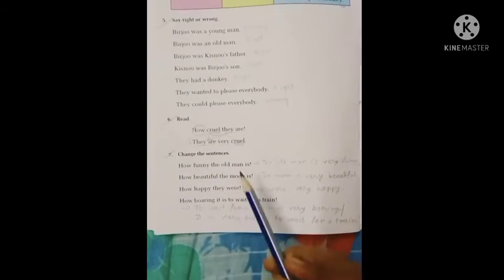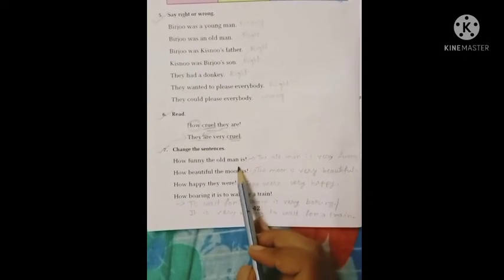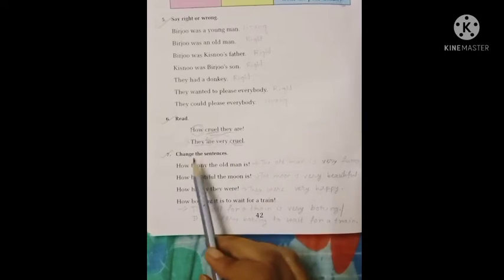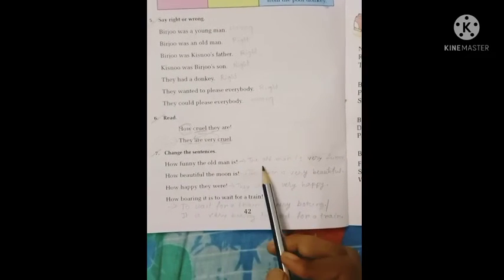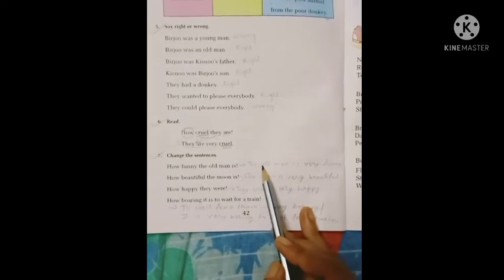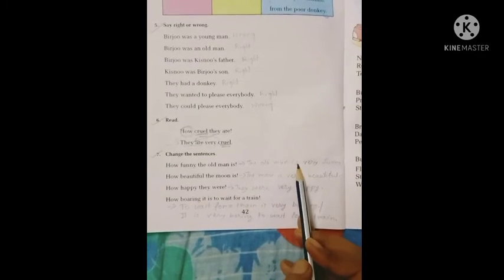In the same process, you have to write the answers here. How funny the old man is. The old man is, so I have to write the subject and verb first, then write very.